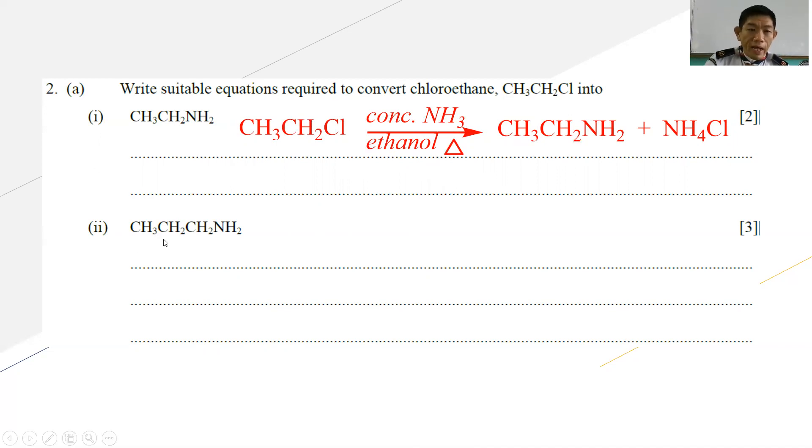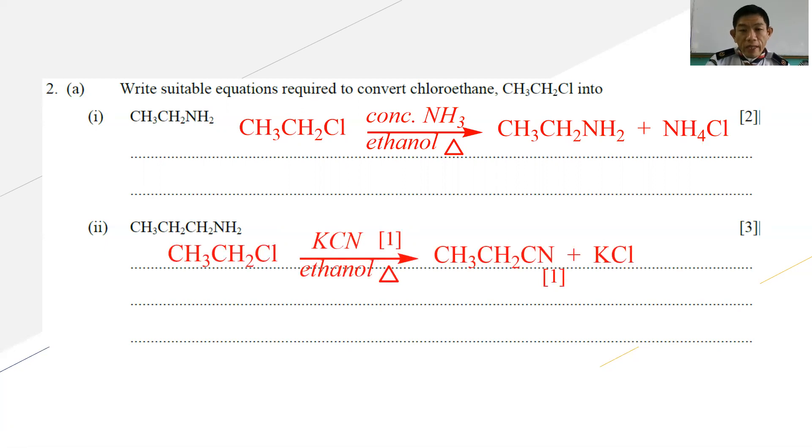Number two, how do you convert into this product? Since there is an increase in number of carbons, you are suggested to use a nitrile. Use cyanide to form a nitrile, and then from nitrile, you reduce to become the desired amine. Starting from chloroethane, you use ethanolic potassium cyanide under reflux and you form propanenitrile. From propanenitrile, you undergo reduction using LiAlH4 followed by H3O+ to form your desired product of propan-1-amine. This is a very straightforward reaction. Hopefully you will be able to write the appropriate synthesis course for this.